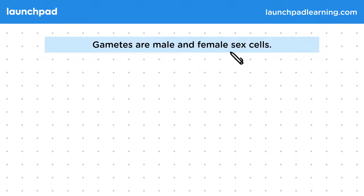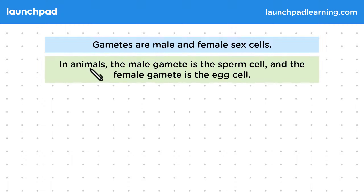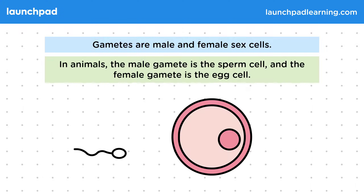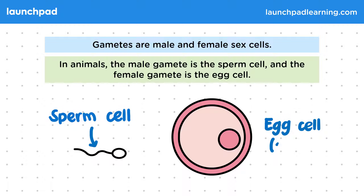Gametes are male and female sex cells. In animals, the male gamete is the sperm cell and the female gamete is the egg cell. The left hand diagram shows a sperm cell, and the diagram to the right shows an egg cell, or an ovum.